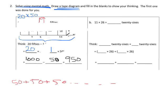Let's try problem B: 11 times 26. We can think of this as 11 26s. There are a lot of different ways to approach the mental math, but the guided approach is to think of this as 10 26s plus 1 extra 26. So that's 10 times 26 plus 1 times 26, which is 260 plus 26, equal to 286.